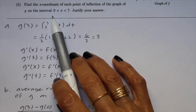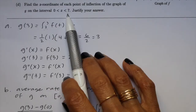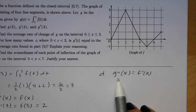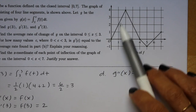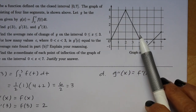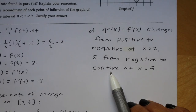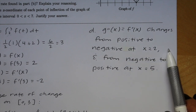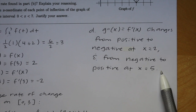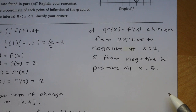Part d says find the x coordinate of each point of inflection of the graph of g on the interval from 0 to 7, and justify your answer. For a point of inflection, we look at the second derivative of g, which equals f prime of x — the slope of the tangent line of the graph. The slope of the tangent line changes from positive to negative at x equals 2, and from negative to positive at x equals 5. Therefore x equals 2 and x equals 5 are the x coordinates of each point of inflection of the graph of g.